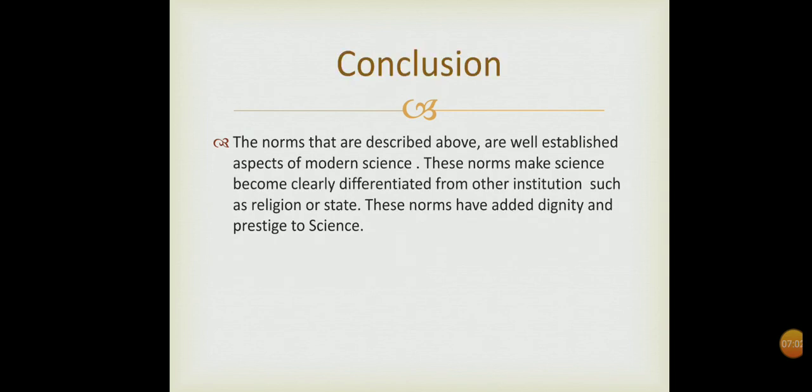In conclusion, we can say that the norms described above are well-established aspects of modern science. These norms make science clearly differentiated from other institutions such as religion and the state. These norms have added dignity and prestige to science. This is all about the ethos or norms of science. Thank you.